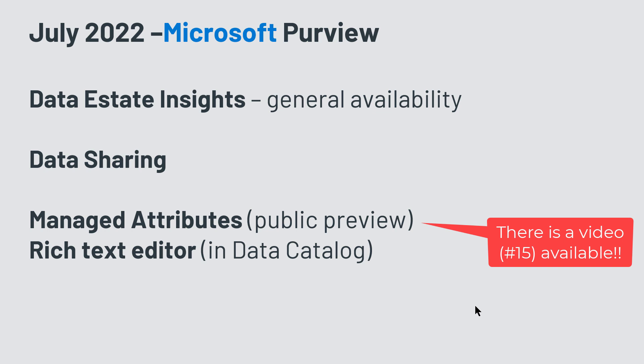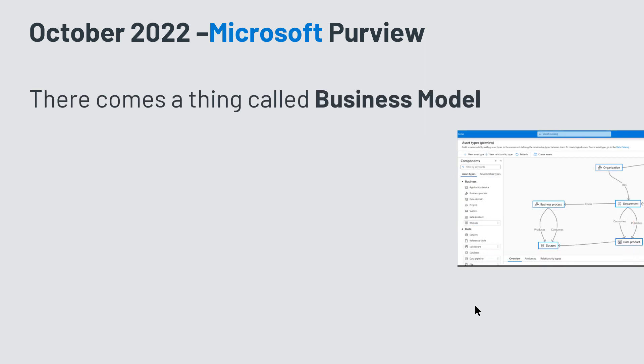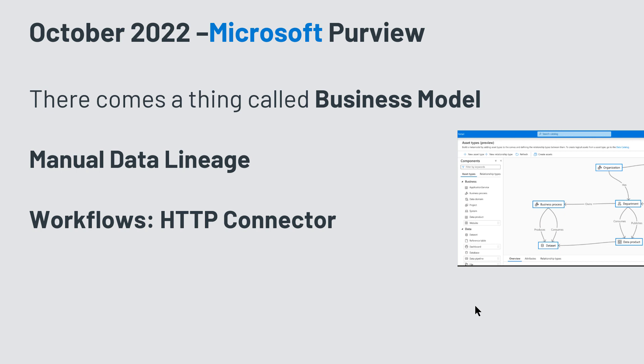Summer was quite silent in the Microsoft Purview field. In October, there were some rumors and a blog post about something called the business model — the meta model — and it wasn't clear how it would be introduced and integrated into Microsoft Purview. We also got manual data lineage, allowing you to add a new lineage reference between two entities or assets in your data catalog whenever a source doesn't support it automatically. For Microsoft Purview workflows, a new HTTP connector was added, enabling communication with systems outside of your Purview environment.